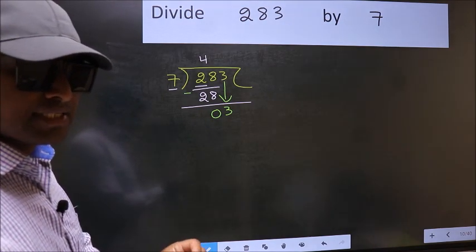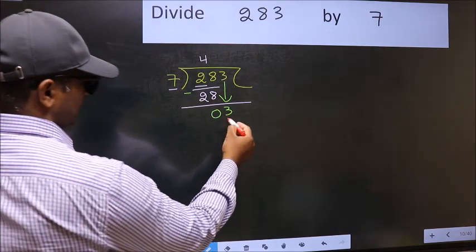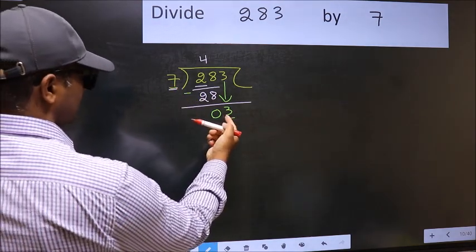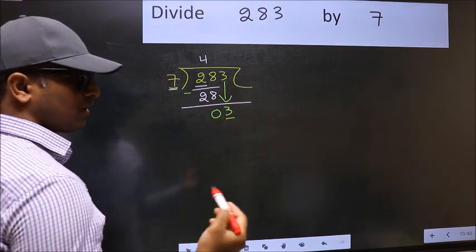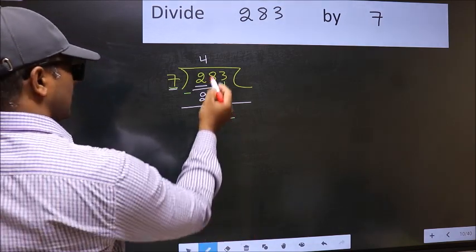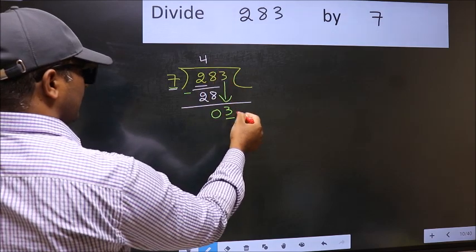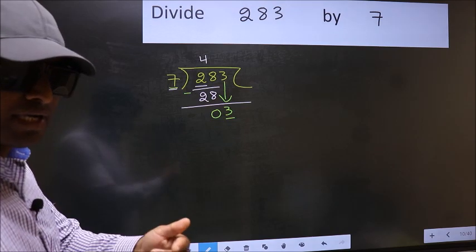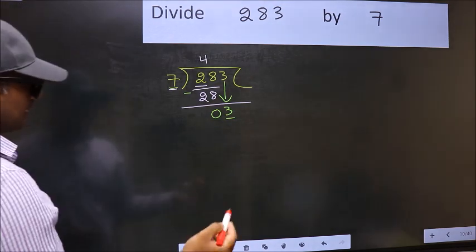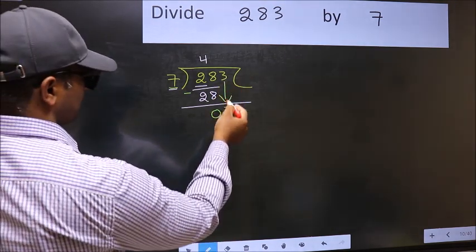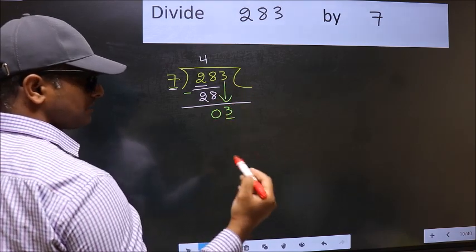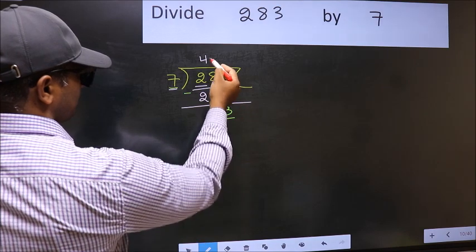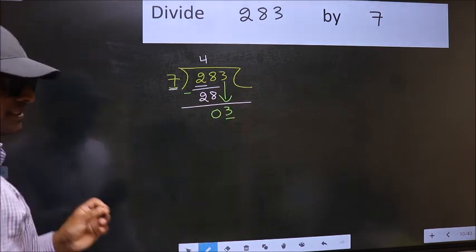And the mistake is this. Here we have 3 and here 7. 3 is smaller than 7. So what many do is they directly put dot and take 0, which is wrong. Why is it wrong? Because just now you brought this number down, and in the same step you want to put dot and take 0, which is wrong.